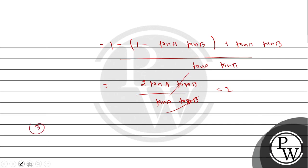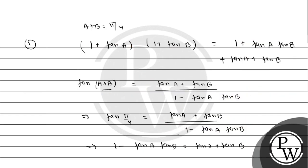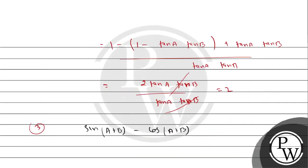Answer is 2. Now let's look at the 3rd part. We need to find sin(a+b) minus cos(a+b) plus tan(a+b). A plus b is already given as pi by 4. So this becomes: sin(pi/4) minus cos(pi/4) plus tan(pi/4). sin(pi/4) value is 1 by root 2, cos(pi/4) value is 1 by root 2 - these cancel out. tan(pi/4) equals 1. So the answer for the 3rd part is 1.